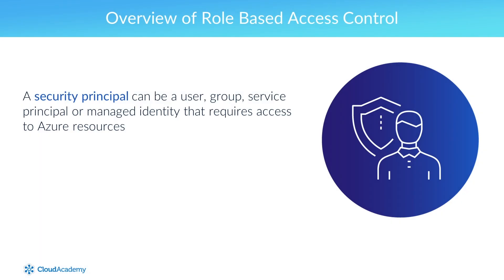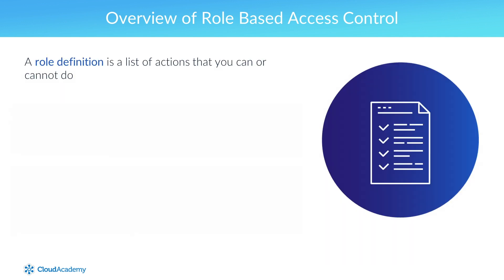A security principal can be a user, group, service principal, or managed identity that requires access to Azure resources. A role definition is a list of actions that you can or cannot do. Your role definition could allow you to create and manage virtual machines, but prevent you from deleting them.